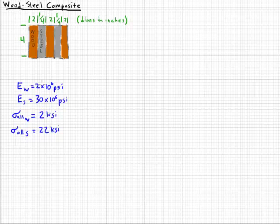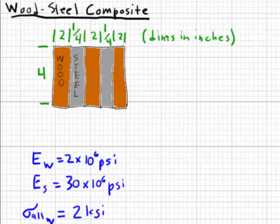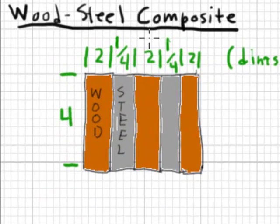The following is an example problem of a wood steel composite beam under bending. Now in this case, we're going to have bending across the vertical axis. Often we have bending on the horizontal axis. But we'll go across the vertical centroidal axis.